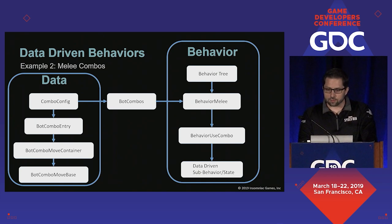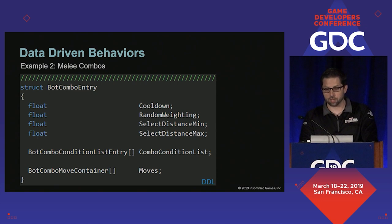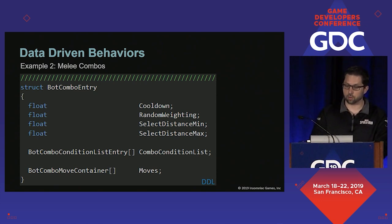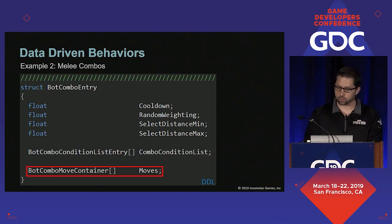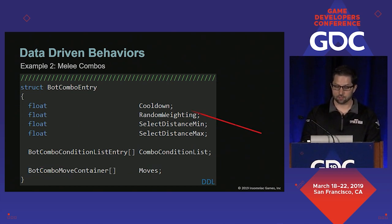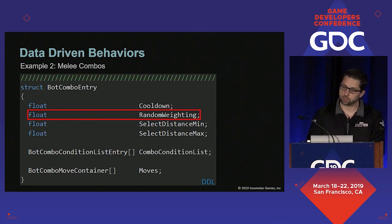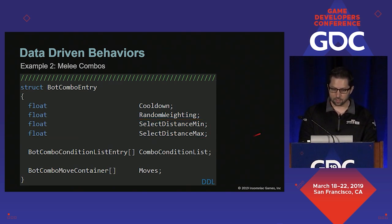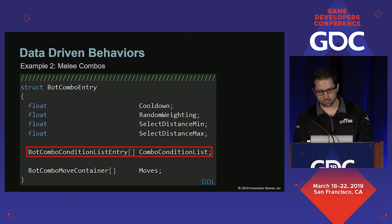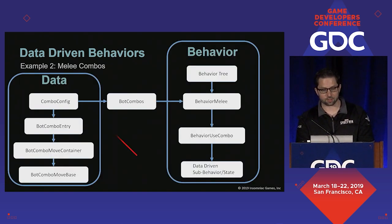We've discussed the bottom half of this diagram, so next we're going to look at the actual combo entries themselves. Because behavior use combo may want to perform more than one move in a sequence, the combo entry contains a list of them to execute one after the other. It also contains all of the data for determining when a combo is valid — for example, a cooldown for how often it can be used, a weighting value to be used when selecting between valid combos, a pair of distances that define the range at which a combo is valid, as well as a list of other arbitrary data-driven conditions.